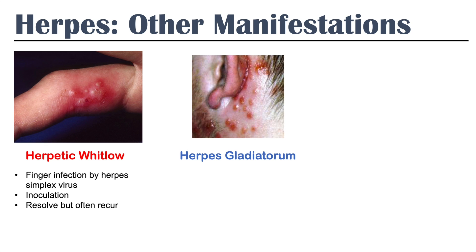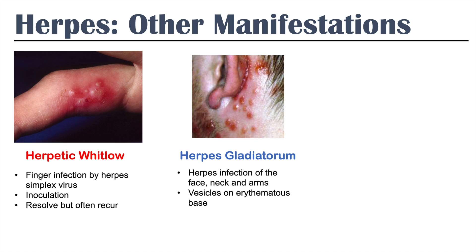Another manifestation is herpes gladiatorum — a herpes infection of the face, neck, or arms. There's an inoculation of a site on the face, neck, or arm rather than a lip or finger, and you get vesicles on an erythematous base, just like with oral herpes.